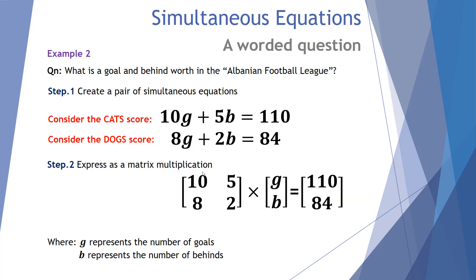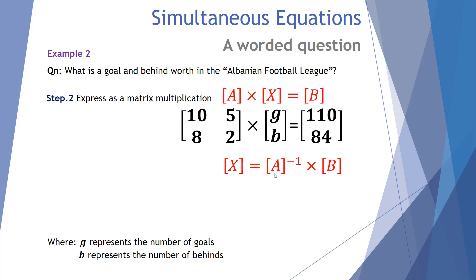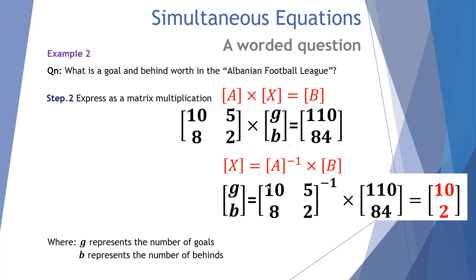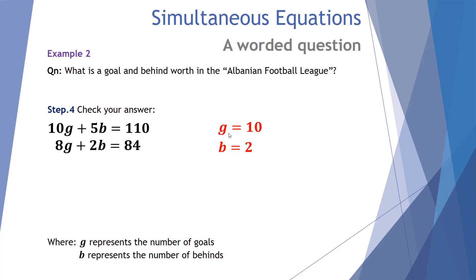Step two — set up as a matrix multiplication. The G column has 10 and 8; the B column has 5 and 2; the unknowns are G and B; and the totals are 110 and 84. If we move those variables from vertical to horizontal, G comes first and then B — they're in the correct order. The format is A times X equals B. To find the unknown X, we take the inverse of A and multiply it by B. Our values give us the unknown matrix G, B equal to 10 and 2.